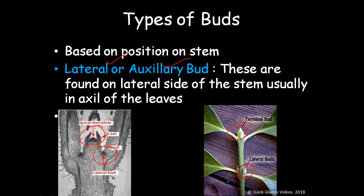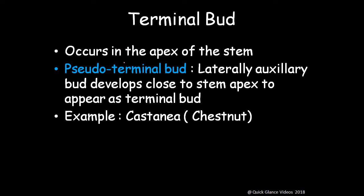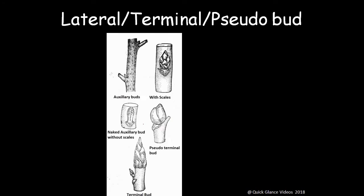The terminal bud occurs at the apex of the stem. One more form is the pseudo-terminal bud: when the axillary bud develops close to the stem apex, it appears as a terminal bud — that is called a pseudo-terminal bud. Example: Castanea (chestnut). In the picture, you can see axillary buds with scales, axillary buds without scales (naked), the pseudo-terminal bud, and the true terminal bud.